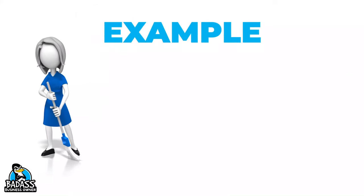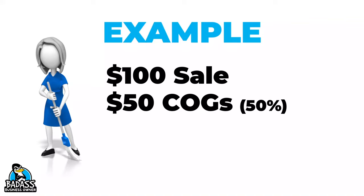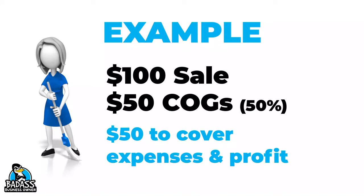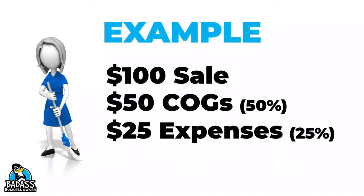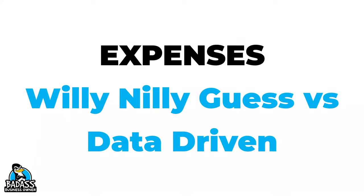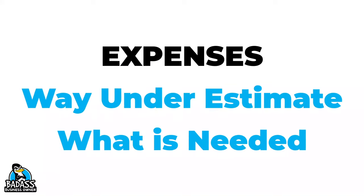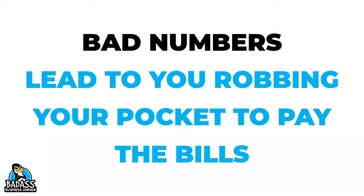For example, if you collect $100 for every sale and your cost of goods run about 50%, that means $50 goes towards costs, leaving $50 to cover expenses and potential profit. If your business expenses typically run 25% of sales, then 25% of the $100 — which is $25 — needs to be set aside to pay your bills as they come due. When a business owner doesn't know what their expenses run, they set prices that are willy-nilly, and oftentimes they way underestimate this amount, which is why they end up stealing the money they would normally pay themselves just to pay the bills.